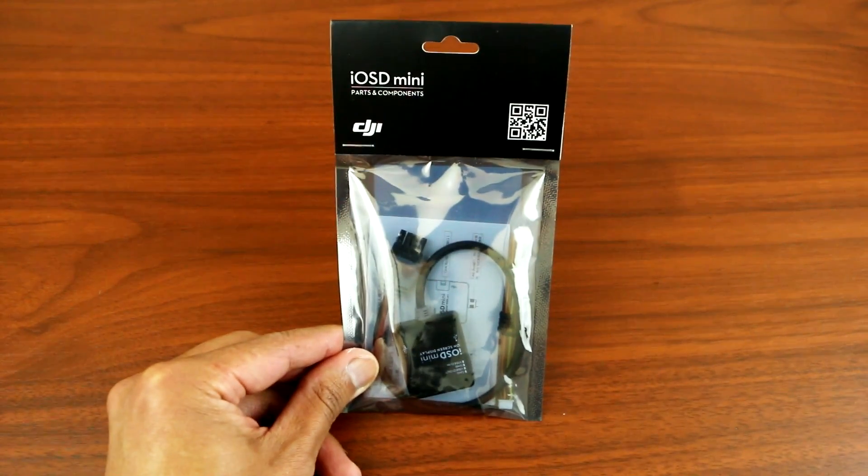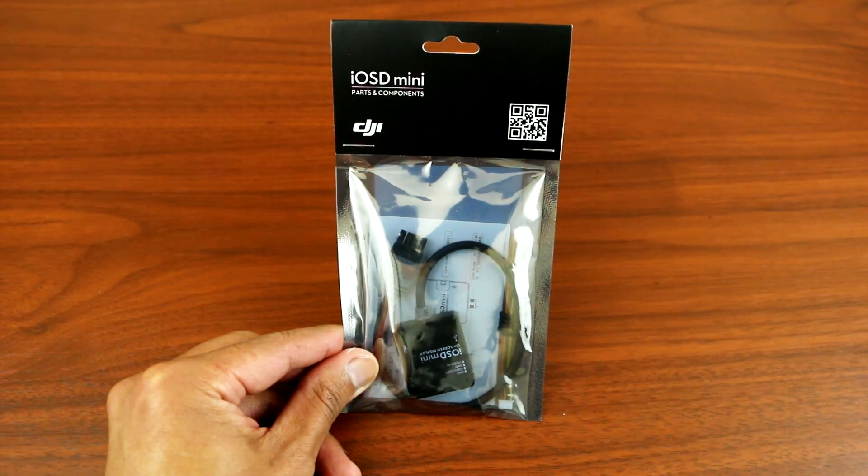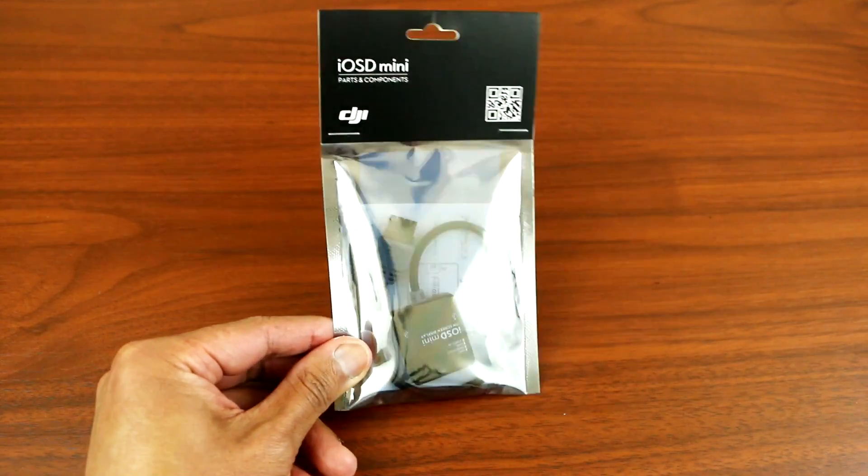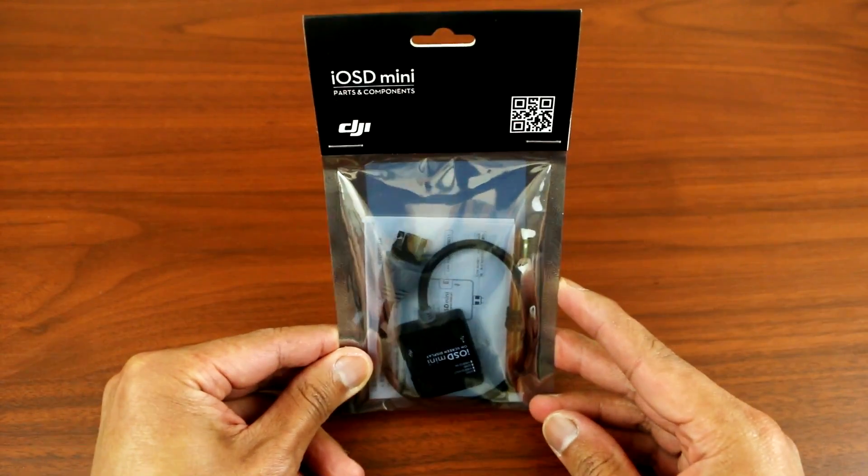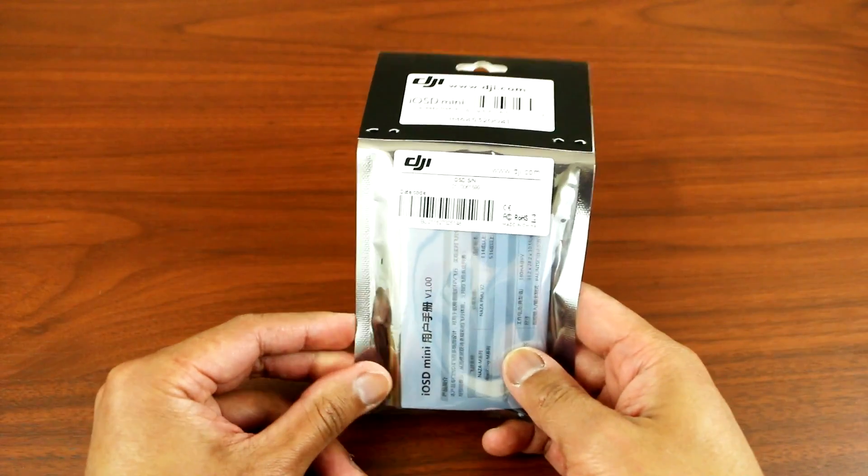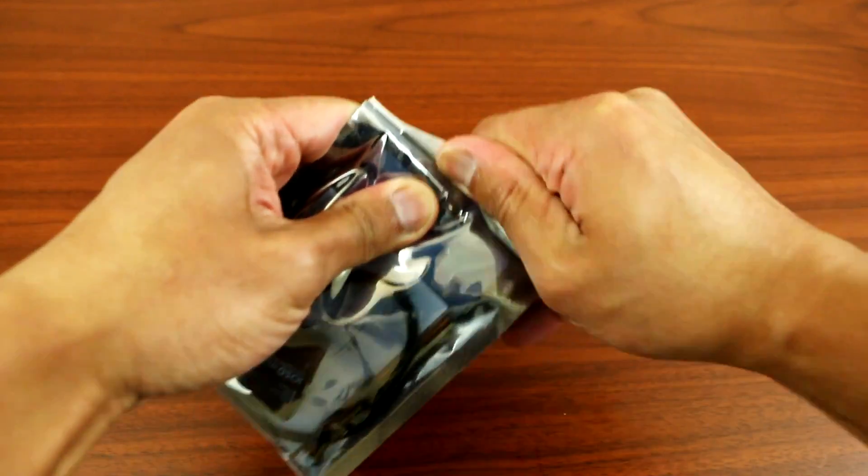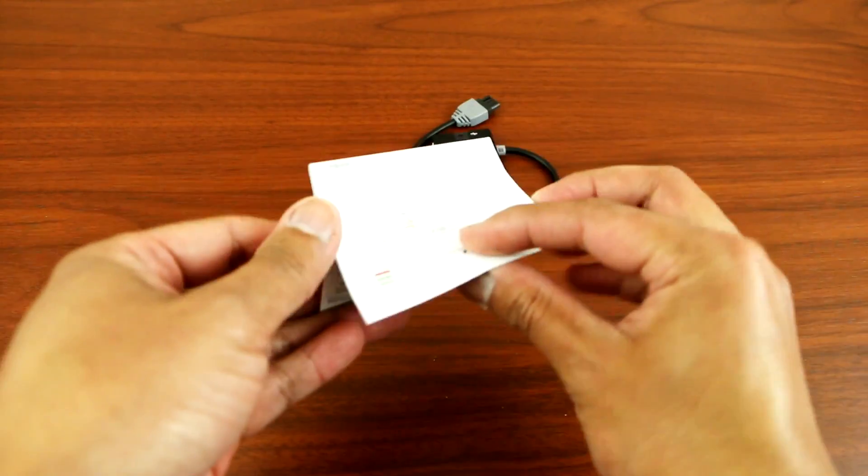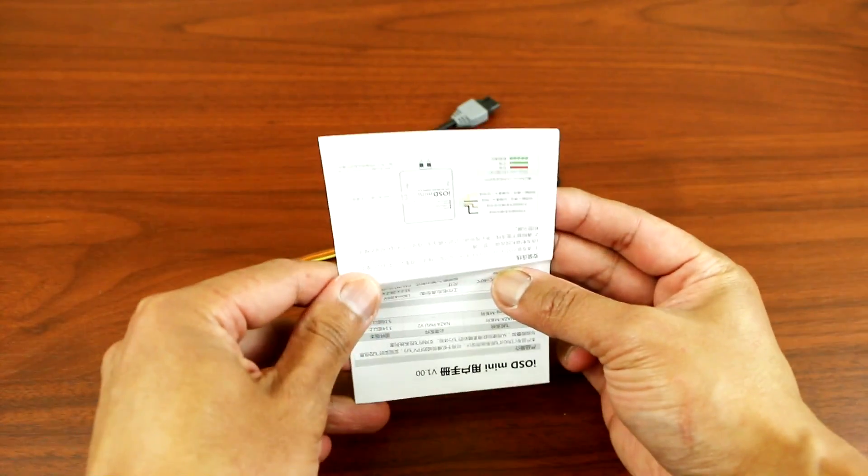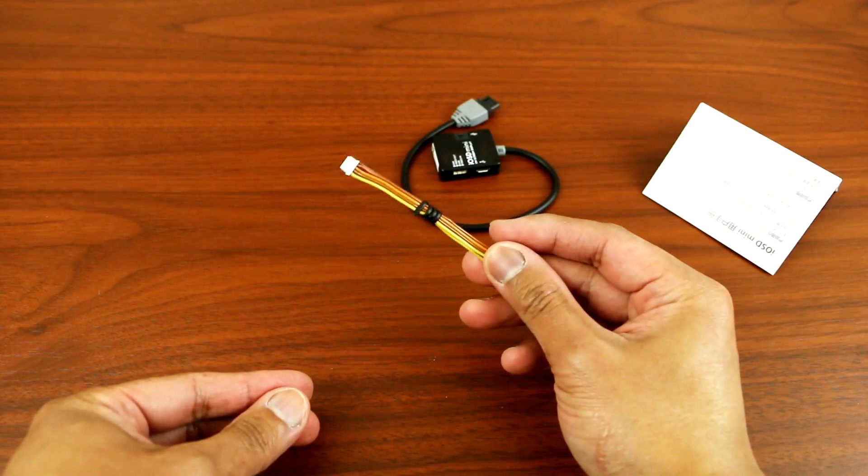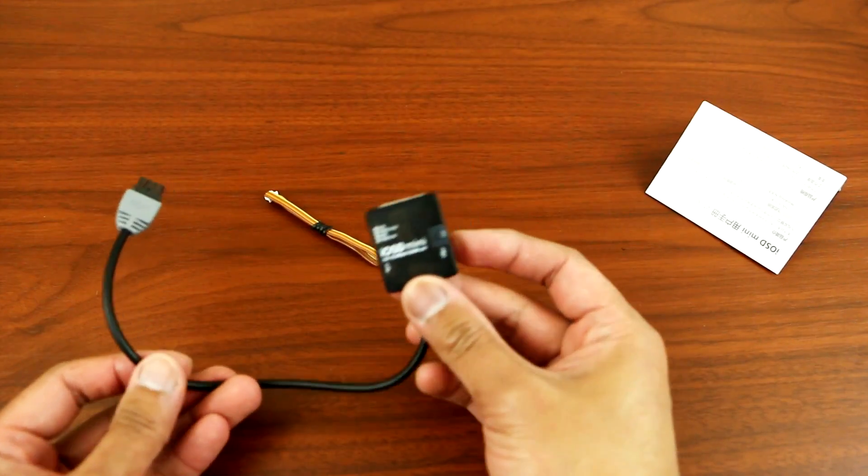Hey, what's up YouTube. Today I'll be showing you guys how to install the DJI iOS D mini to your Phantom 2. Here's what the package looks like. Let's open it up. It comes with an instruction manual, a mini cable, and the iOS D mini.